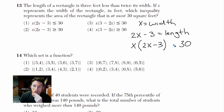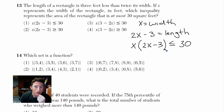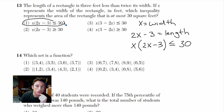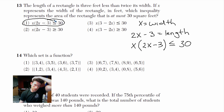I want it at most 30 square feet, so it's got to be equal to or less than 30. That gives us x(2x minus 3) ≤ 30, which is choice number 1. Length times width must be 30 or less.